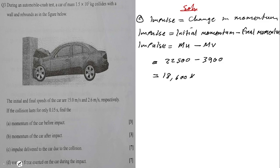The SI unit for impulse is the same as for momentum: kg·m/s. You should also know that this is equivalent to force times time, which gives newton-seconds (N·s). In this case we'll go with kg·m/s.